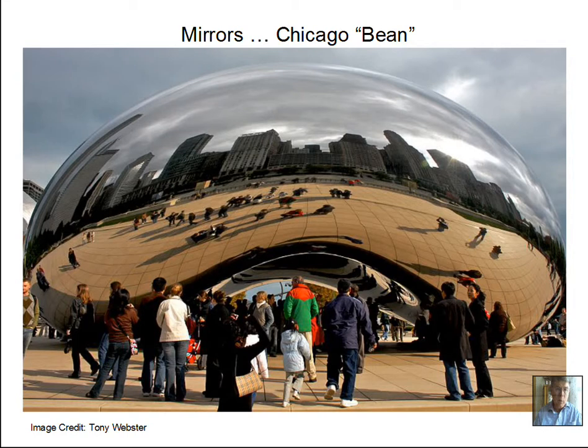If you're near the lakefront in Chicago, Millennium Park, you might see the Chicago Bean. It's a highly reflective surface, curved, convex out in this portion, concave underneath, and has some interesting visual effects. So I hope you're able to see that sometime.